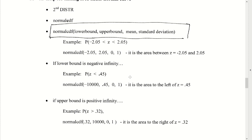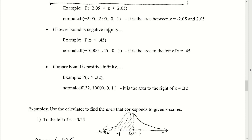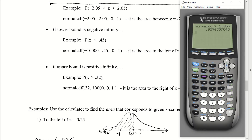It's possible that our regions might be unbounded to the left or to the right. In that case, we use a fill-in number as a placeholder for negative infinity or positive infinity. We will use negative 1E99 — that's negative 1 followed by the second-comma key for E, then 99 — as our placeholder for negative infinity when the region is unbounded to the left.